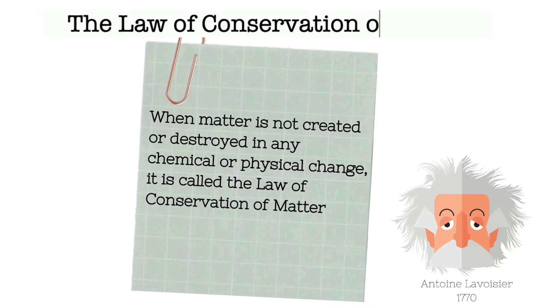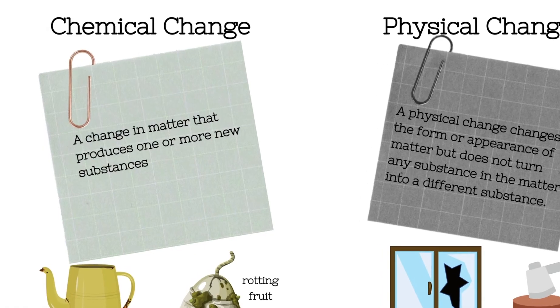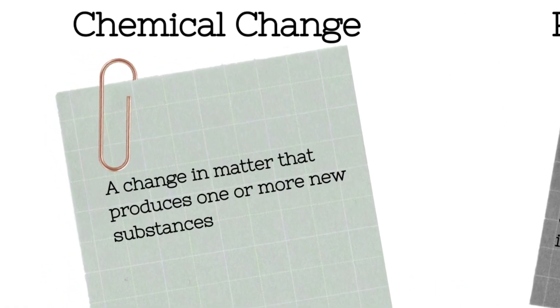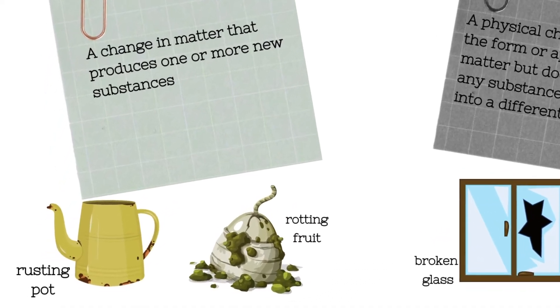In order to understand the Law of Conservation of Matter, you have to have an understanding of chemical versus physical changes. A chemical change is a change in matter that produces one or more new substances, like a rusting pot or rotting fruit.